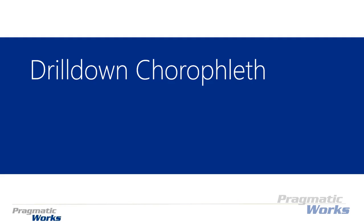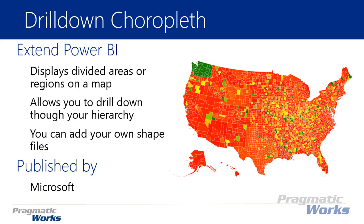Welcome back to the Power BI custom visuals course. In this module we're going to be looking at the drill down choropleth. A choropleth is a type of map that displays divided areas or regions. As you can see in the screenshot on the right, we're looking at individual counties in the United States. The nice thing about the drill down choropleth is it allows you to drill deeper into a higher tier.